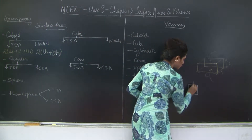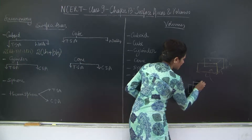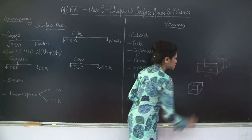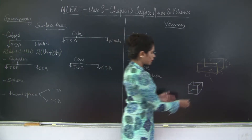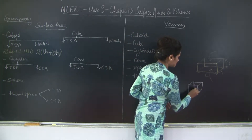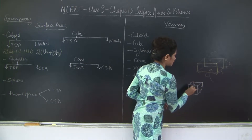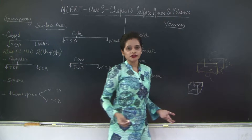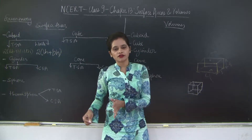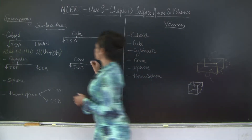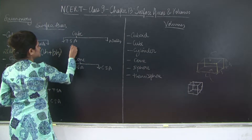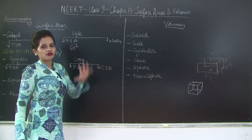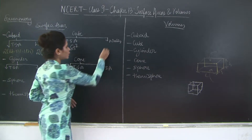For a cube, all sides are congruent to each other. There are six faces, and the area of each square face is side squared. So the total surface area is 6 × side². Similarly, for the lateral surface area of a cube, we cut out the top and base, leaving four side-squared faces — so the lateral surface area is 4 × side².